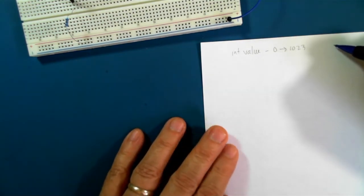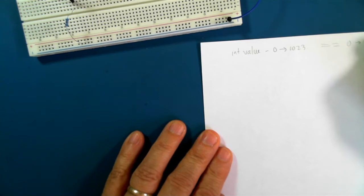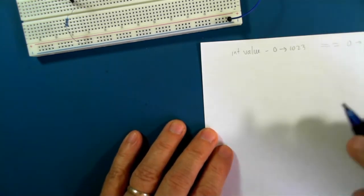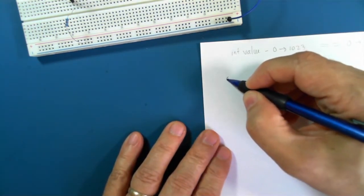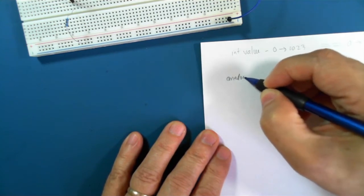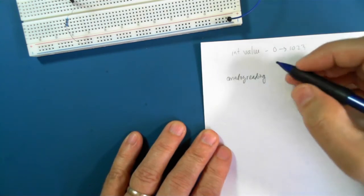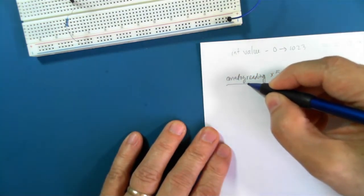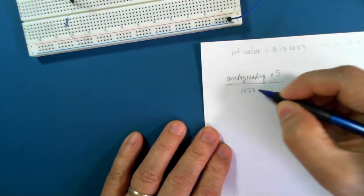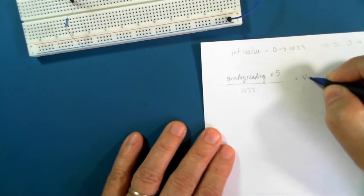and this is representing actually 0 to 5.0 volts. So the way we do this is we take our analog reading and we multiply it by 5 and then we divide it by 1023 and that should give us our voltage